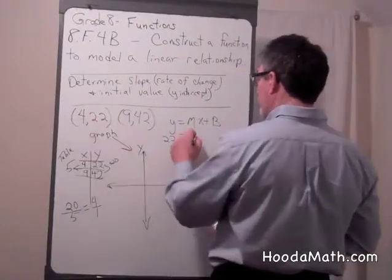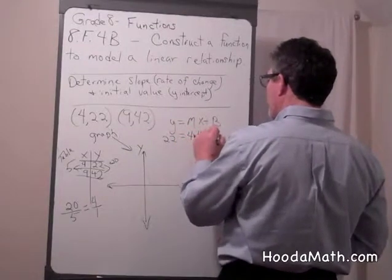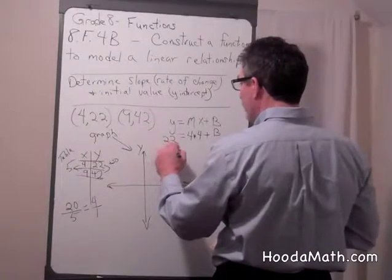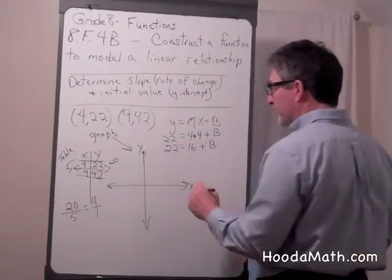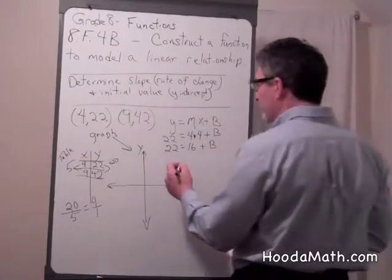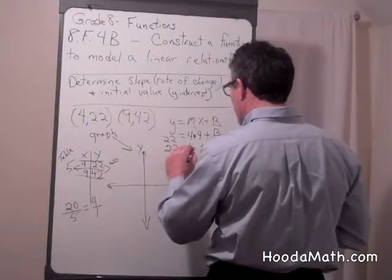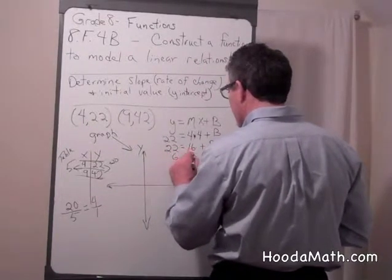x equals 4, and then we're going to determine the y-intercept. So 22 equals 16 plus b. We're going to subtract 16 from both sides and you're going to get 6 equals b. What that means is